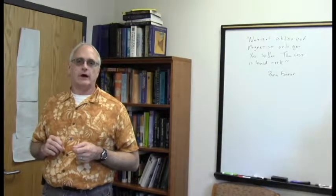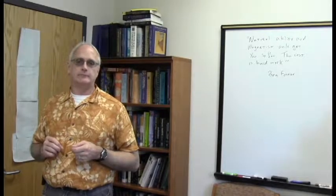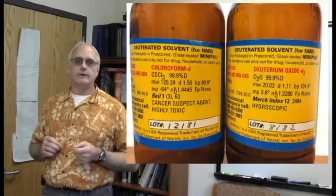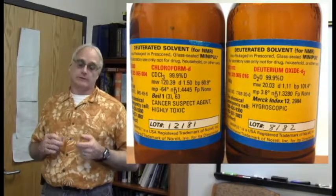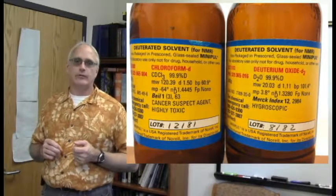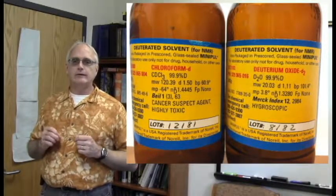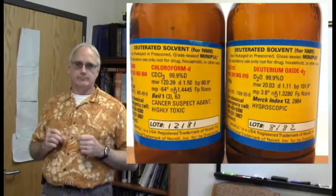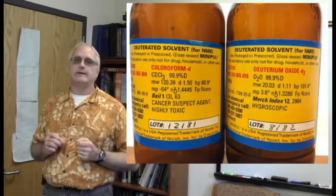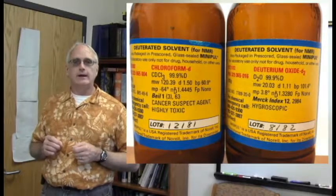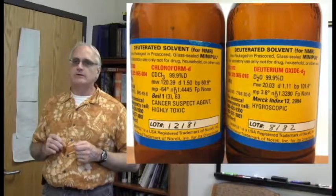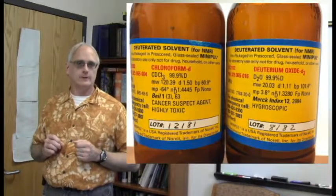Here are some pictures of various bottles of deuterated solvents. The first one shows water, D2O, here called deuterium oxide, and deuterated chloroform, CDCl3. Notice the numbers on the bottle of D2O, deuterium oxide. Its molecular weight is not 18 grams per mole, it's 20, and its melting point and its boiling point and its density are all a little bit different than you would expect from water.